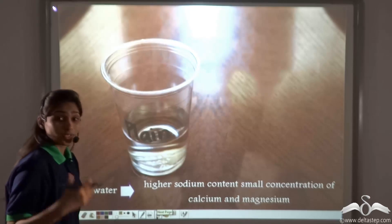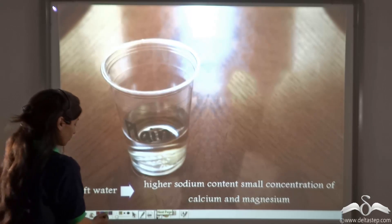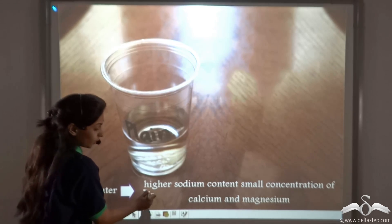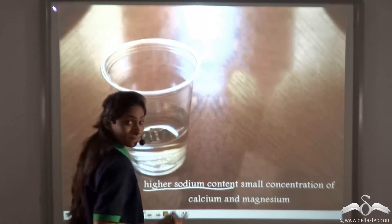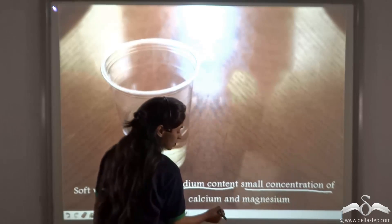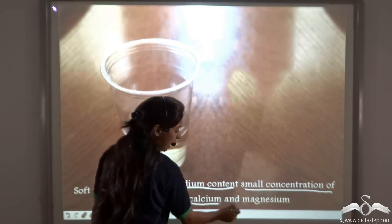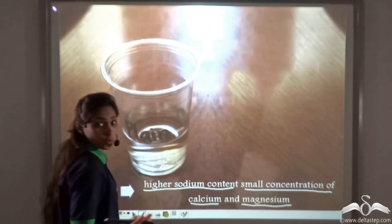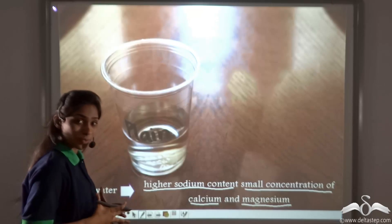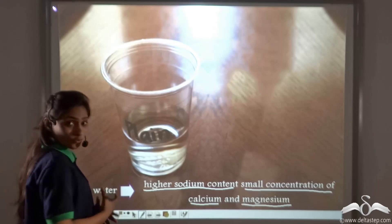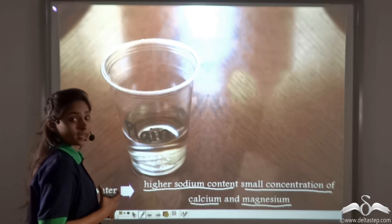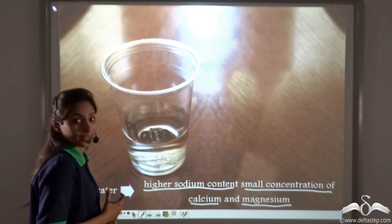Now, what is soft water? Soft water is water with higher sodium content but a small concentration of calcium and magnesium. So to summarize: hard water has more calcium and magnesium, whereas soft water has less calcium and magnesium but more sodium content.